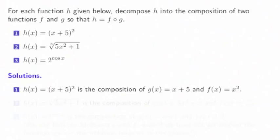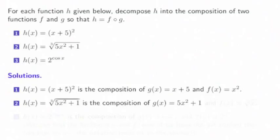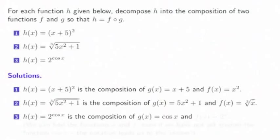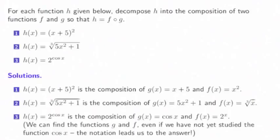So we'll first add 5 and then square. For problem two, this more complicated expression is a composition of a function that first takes x to 5x squared plus 1 and then takes the cube root. For problem three, we could think of h of x equals 2 to the cosine x as a composition of the cosine function and the exponential function 2 to the x. We can do this even if we have not yet studied the cosine function — our notation just leads us to the answer.